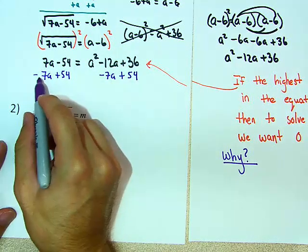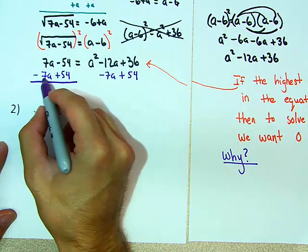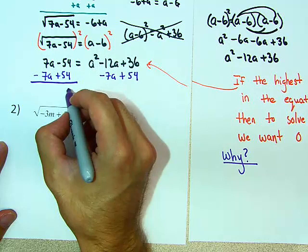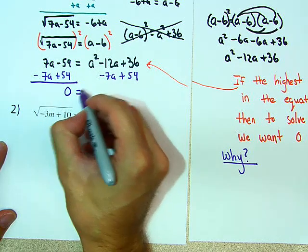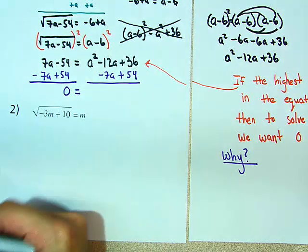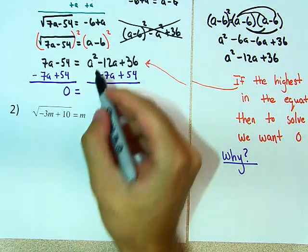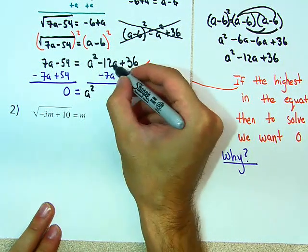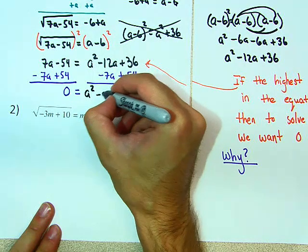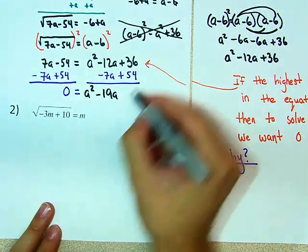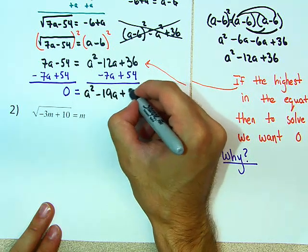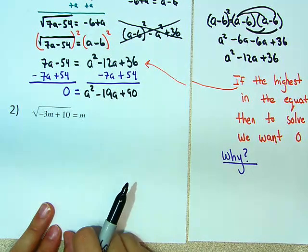We're doing this because here, 7a minus 7a is 0. Negative 54 plus 54 — this side becomes 0. And then what are you left with? A lot of you make careless mistakes. a squared, right? Negative 12a minus 7a is negative 19a. Plus 36 — positive 36 plus 54 is positive 90. Now, this is it.